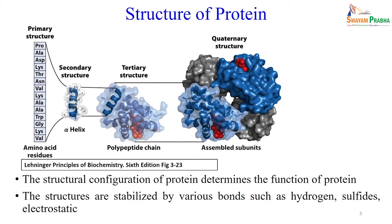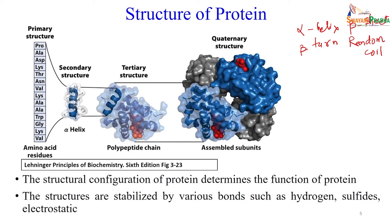The four major secondary structures are alpha helix, beta sheet, beta turn, and random coil. After secondary structure, they fold again into a three-dimensional structure — the tertiary structure. After tertiary structure, a few polypeptide chains assemble together; this assembly is the quaternary structure of a protein.